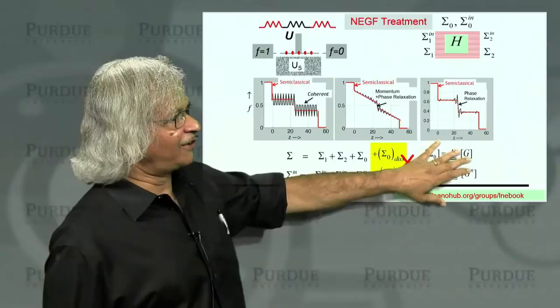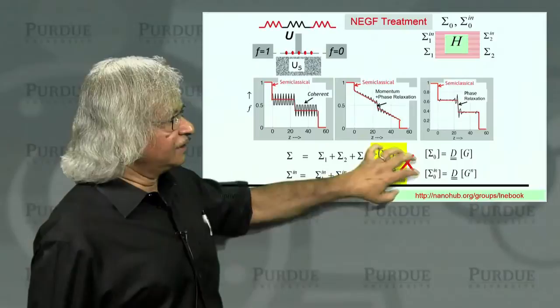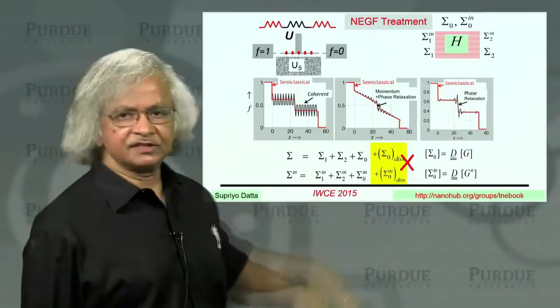But the point I'm trying to make is none of this involves any dissipation in the channel. That is, these models all assume that these are all elastic interactions. No energy is exchanged. Which means all the dissipation is theoretically in the contacts. But nevertheless, you're getting the physics of resistance quite clearly.